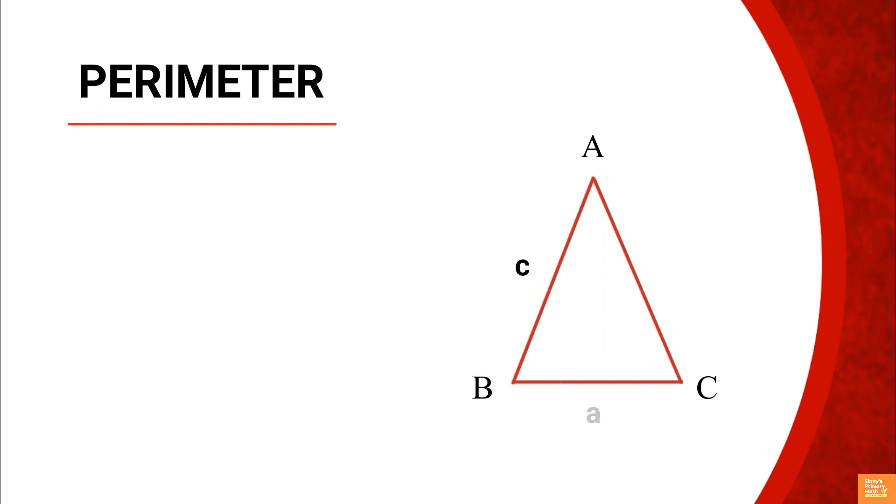If a triangle has three sides A, B and C, then perimeter P equals A plus B plus C. Units same as length.